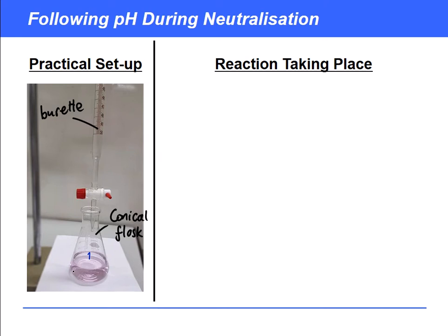One way of doing this is to add an indicator — you can see one in the photo — and when the indicator changes colour, you stop. That's called a titration, which is why these curves are sometimes called titration curves. But what we're basically doing in this experiment is imagining that we've placed a pH probe inside the flask, so we can see how the pH changes as we add the acid or alkali from the burette.